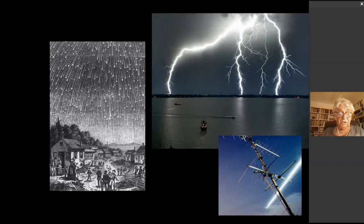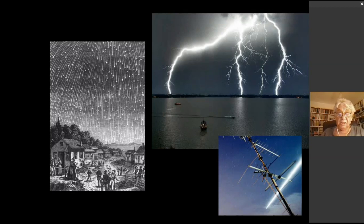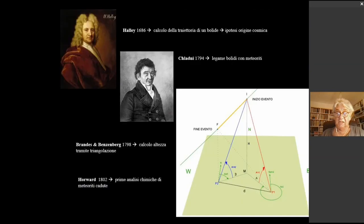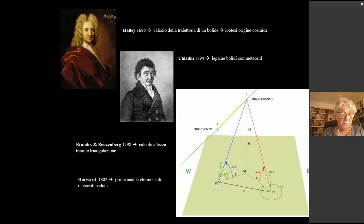Nei secoli recenti si pensava che fossero collegate con l'atmosfera terrestre tramite relazioni di cariche elettriche simili ai fulmini, una cosa ovviamente che veniva naturale da pensare. Halley nel 1686 per primo è quello che ha calcolato la traiettoria di una meteora brillante e ha ipotizzato che fosse di origine cosmica.